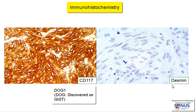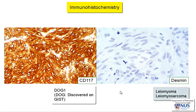In contrast, you can see here this other stain known as Desmin. This antibody is actually negative in GISTs, but it's positive in smooth muscle tumours such as leiomyoma and leiomyosarcoma. So this is how we tell them apart and make the diagnosis on microscopy.